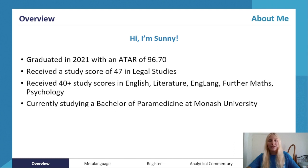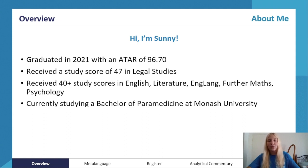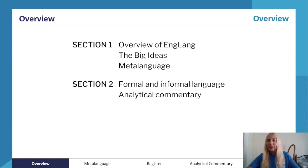We'll first begin with a little bit of information about myself. My name is Sunny. I completed VCE in 2021 and I was college dux with an ATAR of 96.70. My highest study score was a 47 in legal studies and I received study scores of 40 plus. I completed all three English subjects — English, Literature, and English Language — and I'm currently in the last year of a Bachelor of Paramedicine at Monash University.